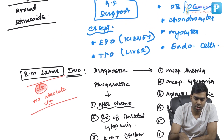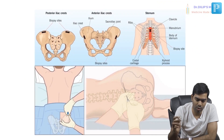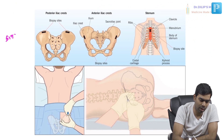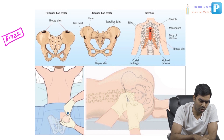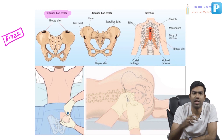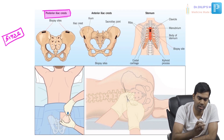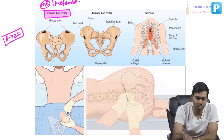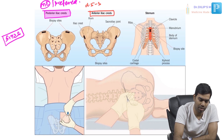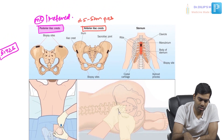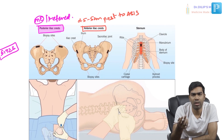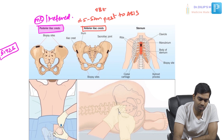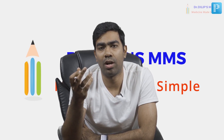Now the sites of bone marrow examination. The most important, classical, and commonest site is the posterior iliac crest — this is the most common as well as the preferred site. The other site is the anterior iliac crest, approximately 2.5 to 5 centimeters posterior to the anterior superior iliac spine (ASIS). However, this is preferred only if the posterior iliac crest is not palpable or if the landmarks cannot be clearly localized — especially in severely obese patients, where the ASIS is easily palpable.